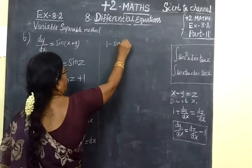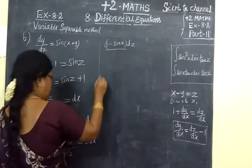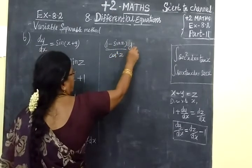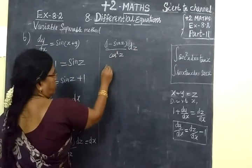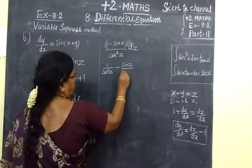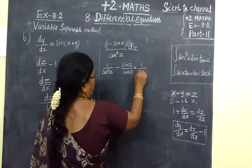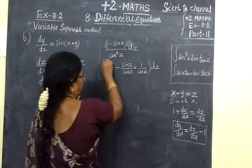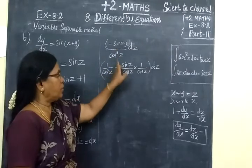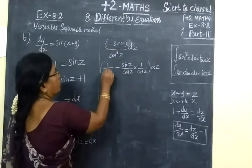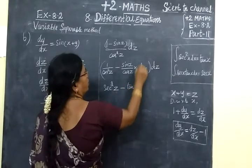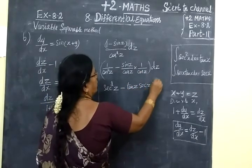We get 1 minus sin z by 1 minus sin squared z, which equals cos squared z by the identity a squared minus b squared. So we get 1 over cos squared z minus sin z over cos squared z, which is sec squared z minus sec z tan z. So the integrand is sec squared z minus sec z tan z, dz equal to dx.